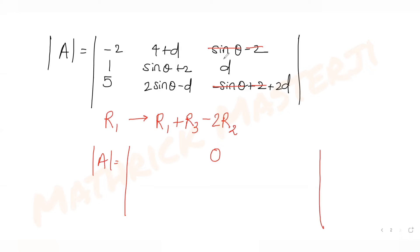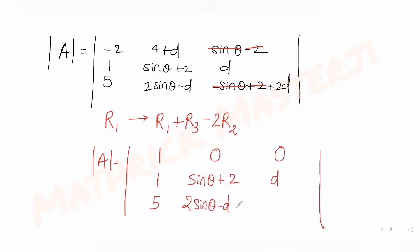After the row transformation, the determinant of A has first row [1, 0, 0]. The remaining entries are: second row 1, sinθ+2, D; third row 5, 2sinθ-D, -sinθ+2+2D.